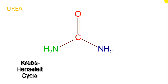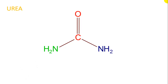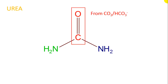Let's briefly go over the urea cycle. Here is the end product, urea, and the origins of all its atoms should be noted. The carbon and oxygen come from CO2 or bicarbonate — essentially equivalent — and that is pretty ubiquitous around the cell.